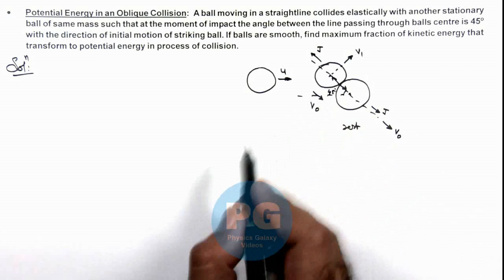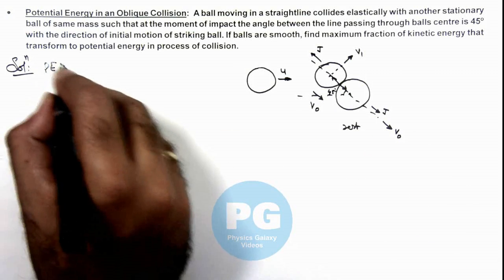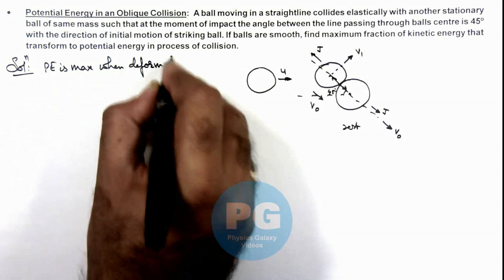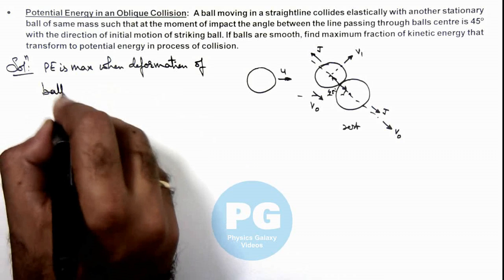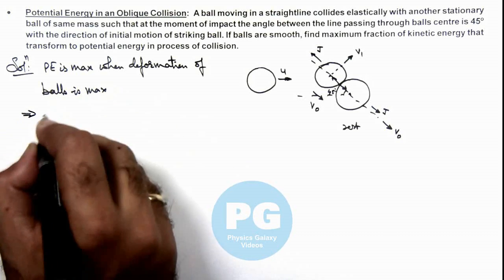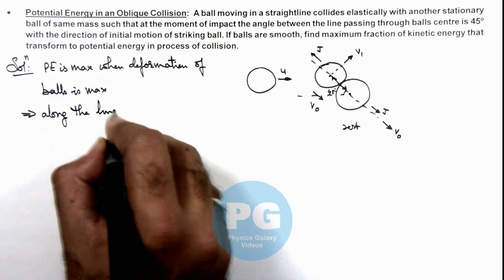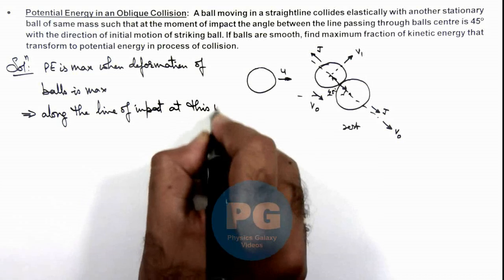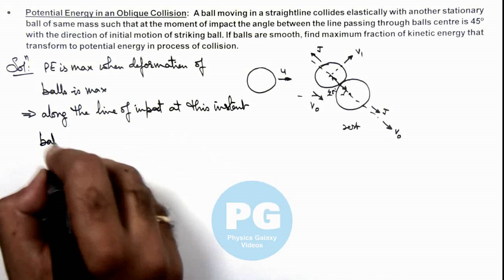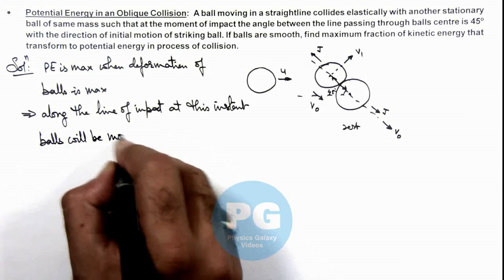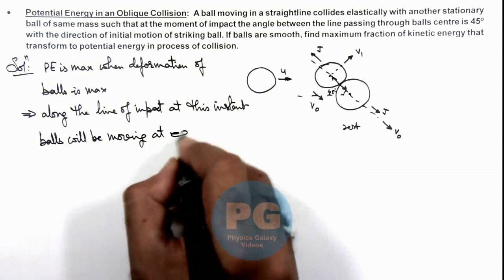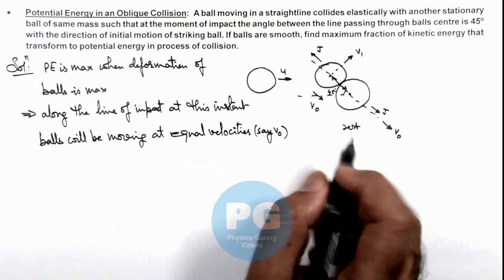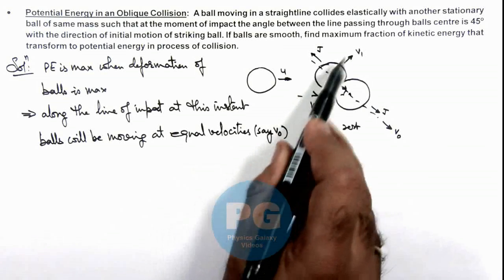In this case, we can write that potential energy is maximum when deformation of the balls is maximum. This implies that along the line of impact, at this instant, both balls will be moving at equal velocities, which is v₀. At this instant, the first ball would also have some component in the normal direction.